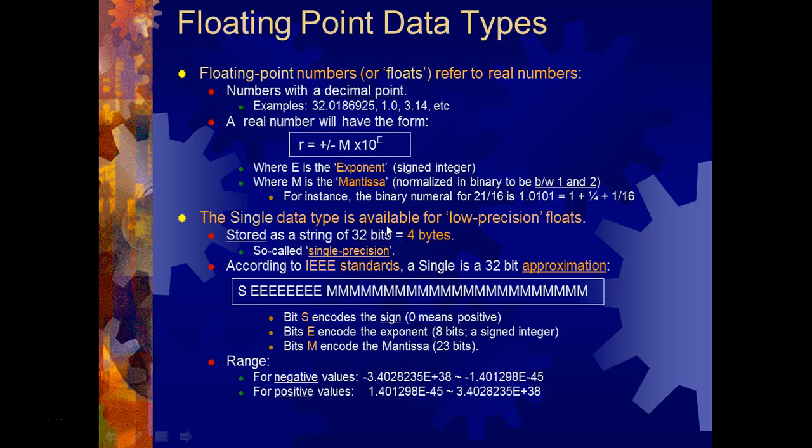Okay, so what happens if we need a decimal number? Those are called floating point numbers, or floats—numbers with a decimal point.